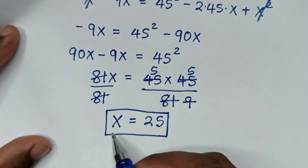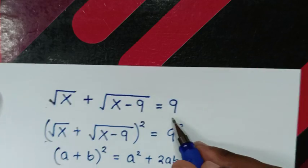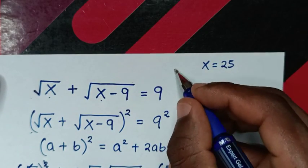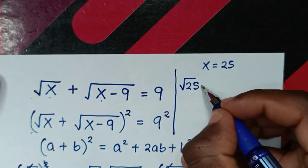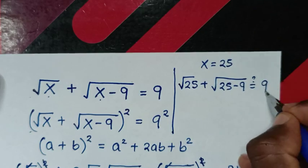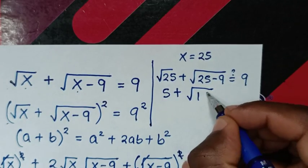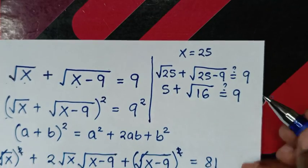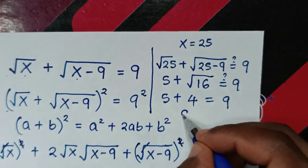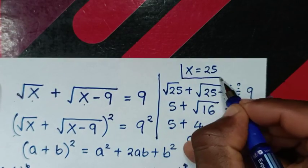Now we verify x = 25 by substituting back into the original equation: √25 + √(25−9) = 5 + √16 = 5 + 4 = 9, which equals 9. The left side equals the right side, confirming x = 25 is correct.